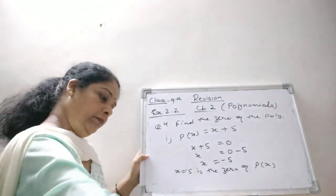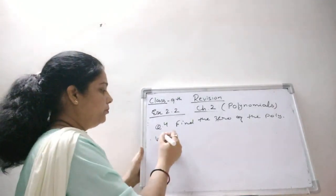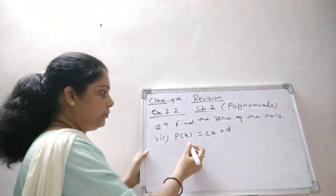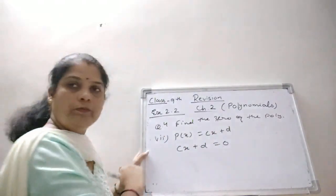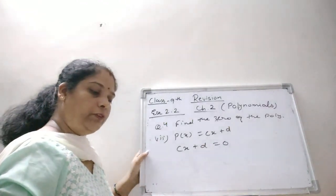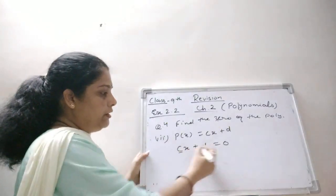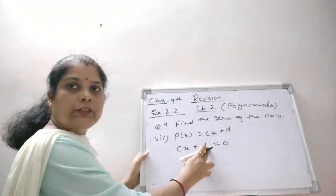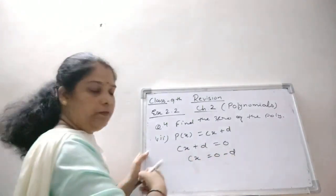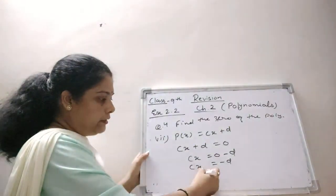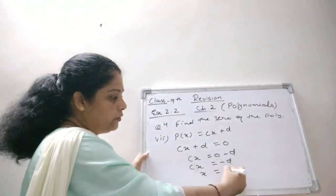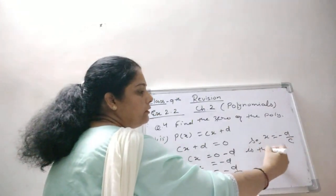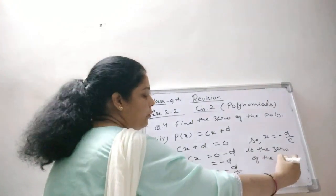Now I am taking the 7th part: P(x) = cx + d, where c ≠ 0 and c, d are real numbers. Setting cx + d = 0, since d is the constant term, we get cx = minus d. Dividing both sides by c, since c is a real number (non-zero), we get x = minus d/c. So x = minus d/c is the zero of the polynomial P(x).